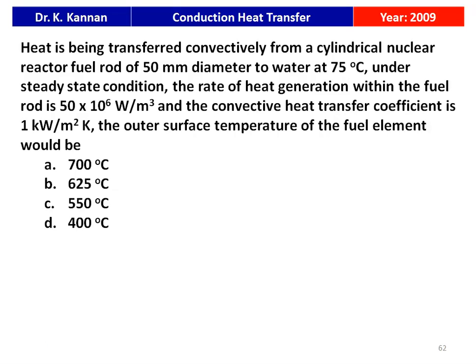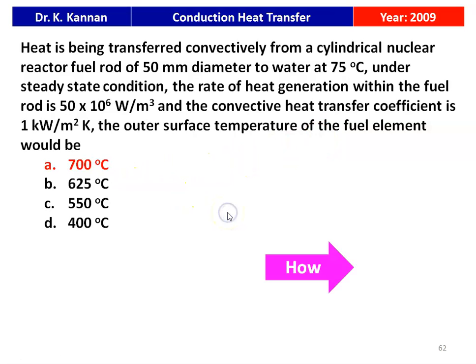Heat is being transferred convectively from a cylindrical nuclear reactor fuel rod of 50 mm diameter to water at 75°C under steady state conditions. The rate of heat generation within the fuel rod is 50 × 10⁶ W/m³ and the convective heat transfer coefficient is 1 kW/m²K. The outer surface temperature of the fuel element would be: 700, 625, 550, or 400 degree Celsius. The answer is 700 degree Celsius.